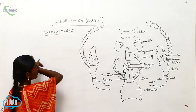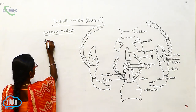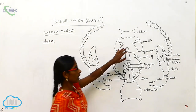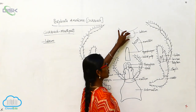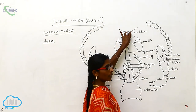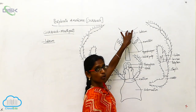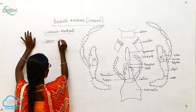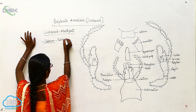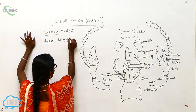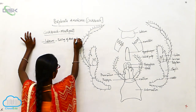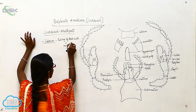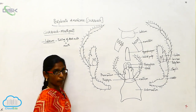The labrum is used for taking food material into the mouth.